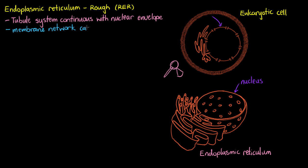Let's focus quickly on naming the separate areas of the organelle that we're looking at. We call the membrane network the cisternae. So all of this folding of the tubules, we're going to refer to as the cisternae of the endoplasmic reticulum. Our membrane folds of our rough endoplasmic reticulum are called the cisternae.